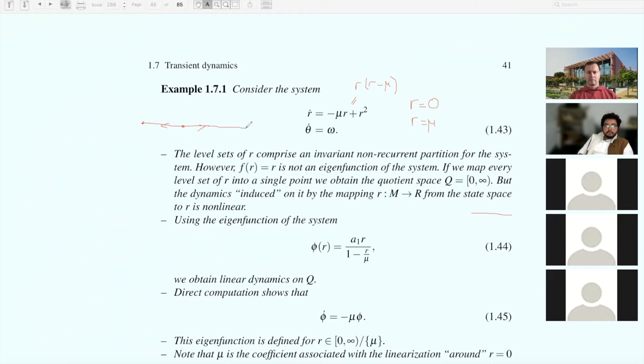This is equal to R times R minus mu. Since R is positive—it's a polar variable—this will only work for mu positive. In that case, you have a stable fixed point at the origin and another one that is unstable. The phase portrait looks something like this.